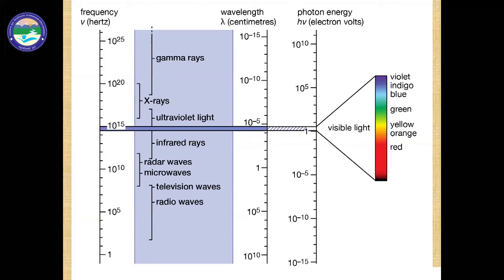The range of light which we can view lies in the visible region. The visible region — VIBGYOR — starts from violet light, then indigo, blue, green, yellow, orange, red. After red, the range becomes invisible for us — that is the infrared region.